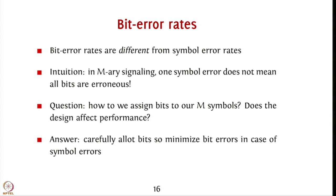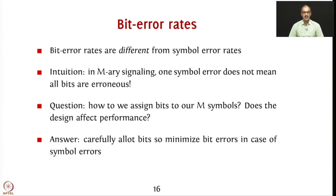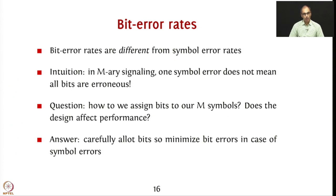The first thing to observe is that bit error rates are different from symbol error rates. In M-ary signaling, it is not always the case that when you have one symbol error all your bits are wrong. For example, in QPSK you have four symbols, each symbol corresponds to two bits. If you send the symbol for bit pair 00 and noise switches it to the symbol for 01, then 00 is detected as 01 — that is a symbol error, but only one of the two bits is incorrect.